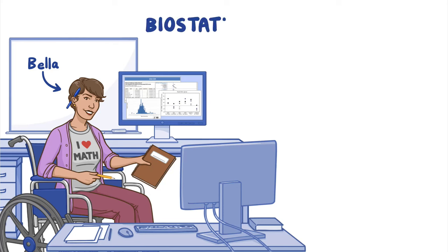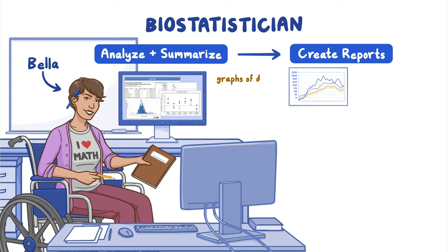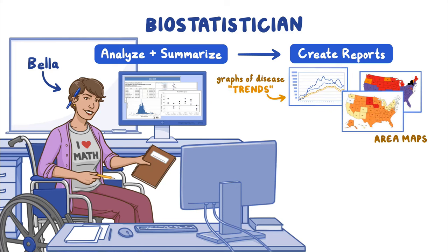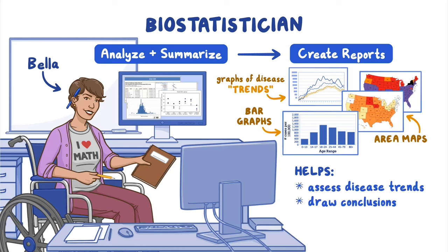Fortunately, Bella, a biostatistician, works at a health department and has all the specialized skills to handle the task. In her work, she uses math to analyze and summarize the collected data. To visualize the data, she creates reports with graphs that show disease patterns or trends, area maps that show cases geographically, and bar graphs that show cases by age and sex. Her reports help other public health experts assess disease trends, draw conclusions about specific health problems and actions needed, and develop strategies to control and prevent public health problems.